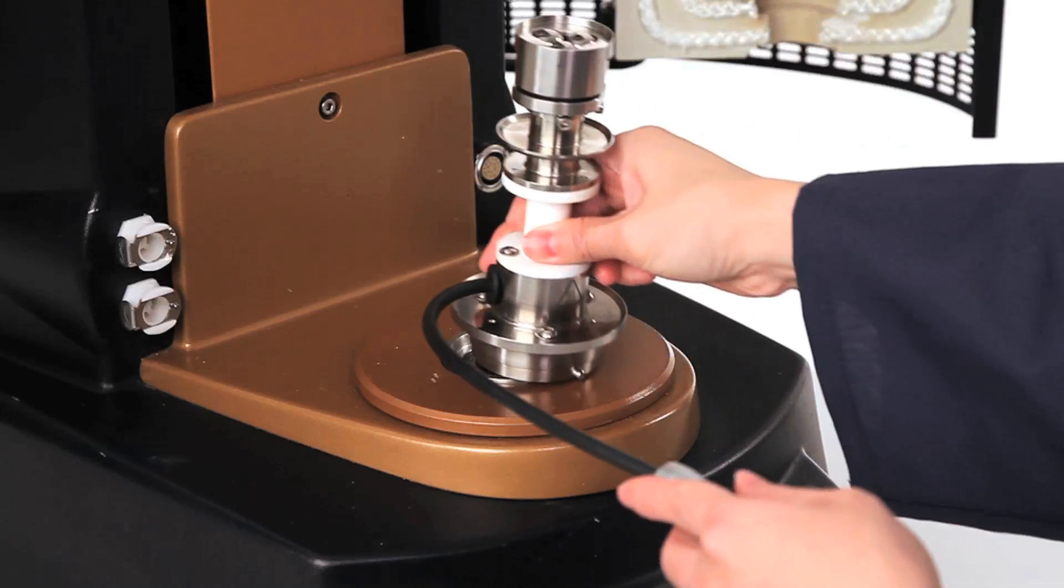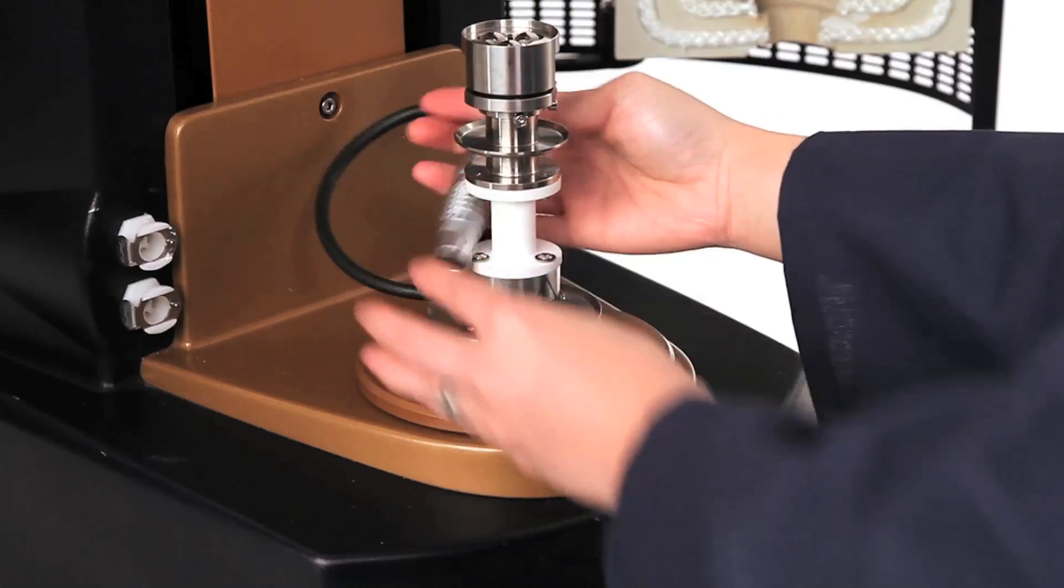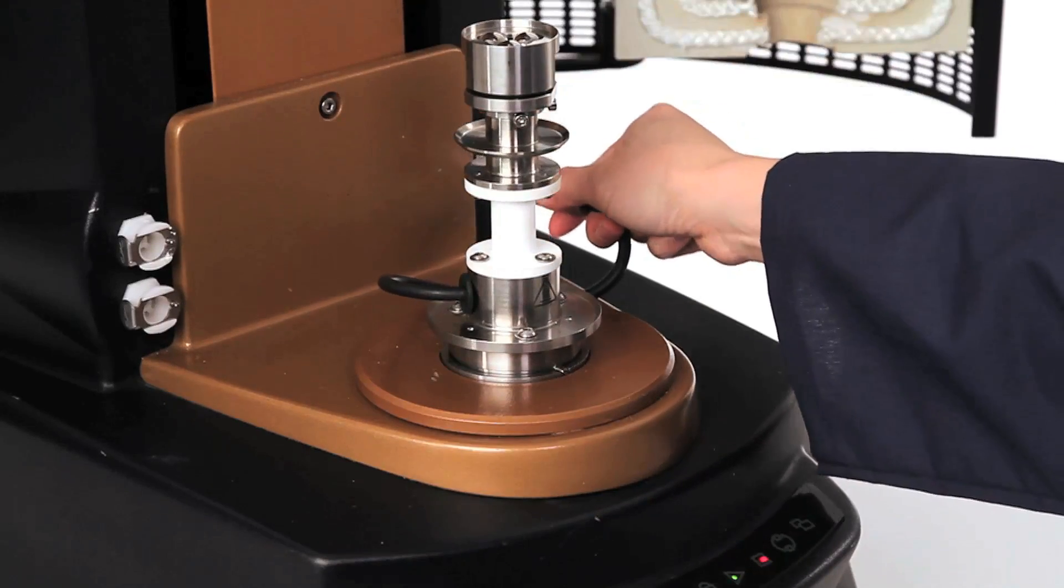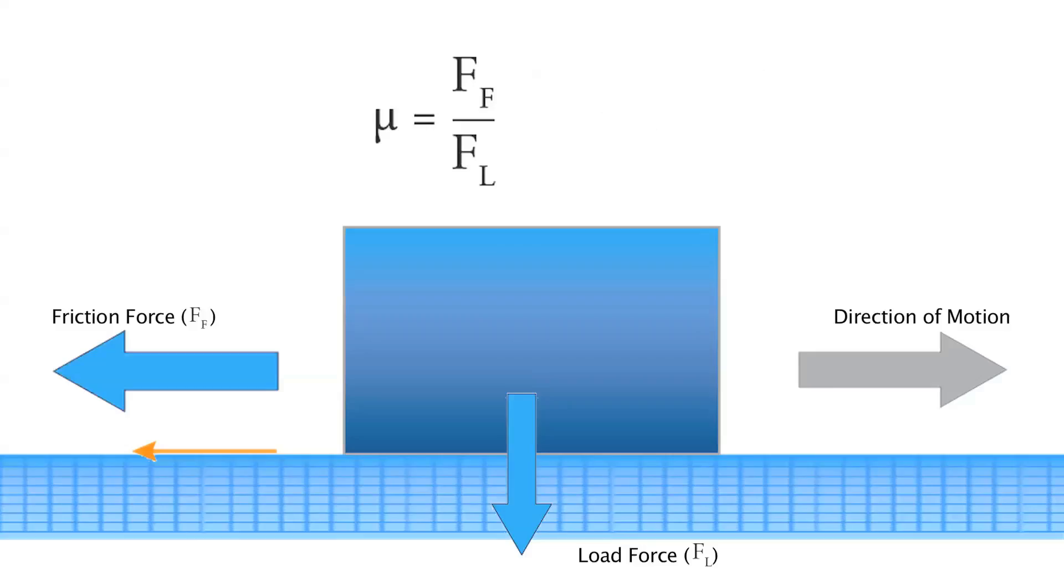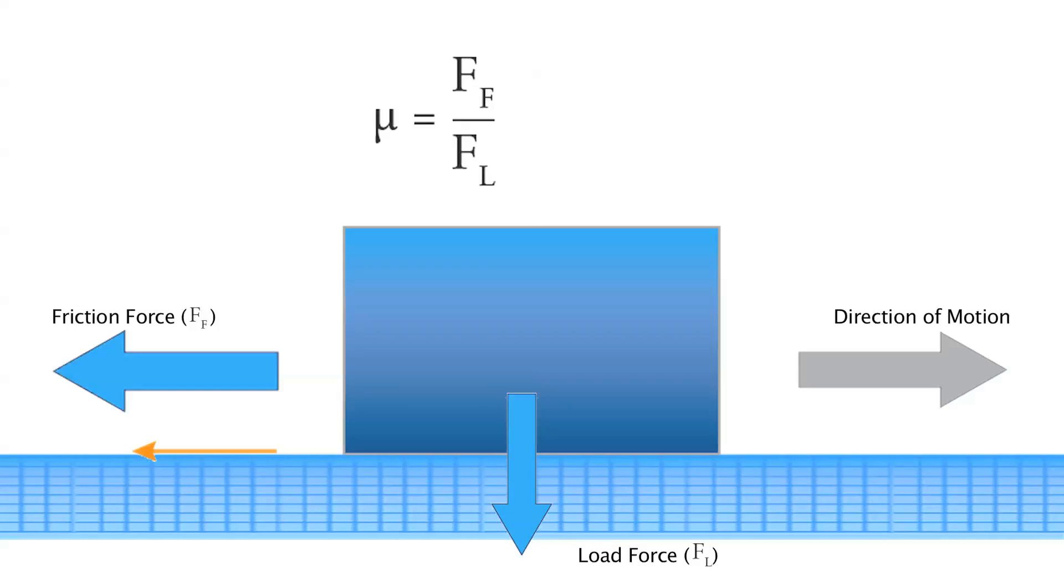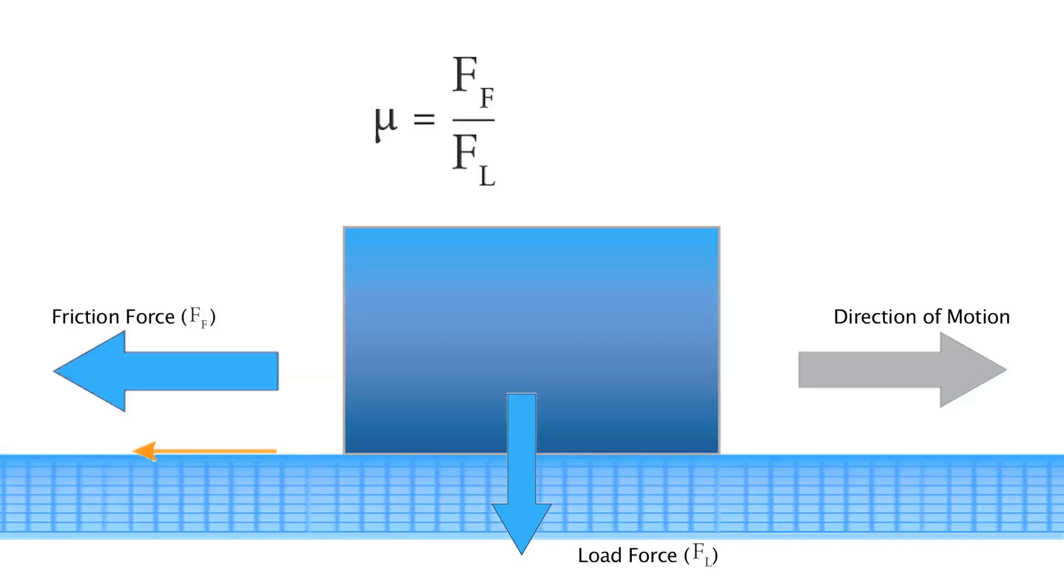The Triborheometry accessory expands the capabilities of your rotational rheometer to the study of friction and wear. The parameter that quantifies friction between surfaces is the coefficient of friction. It is defined as the ratio of the force opposing motion to the force pushing the surfaces together, which acts perpendicular to the motion.